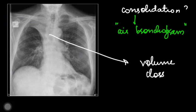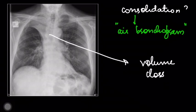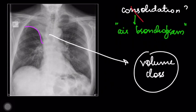In the previous lecture, we saw that the marker of collapse is volume loss. Why do I say that? Because the fissure is elevated. By this reasoning, we have almost ruled out consolidation.